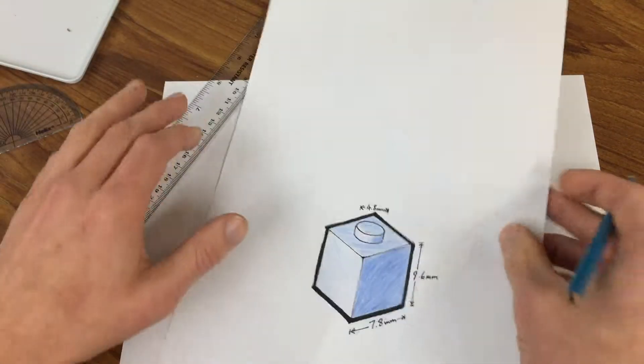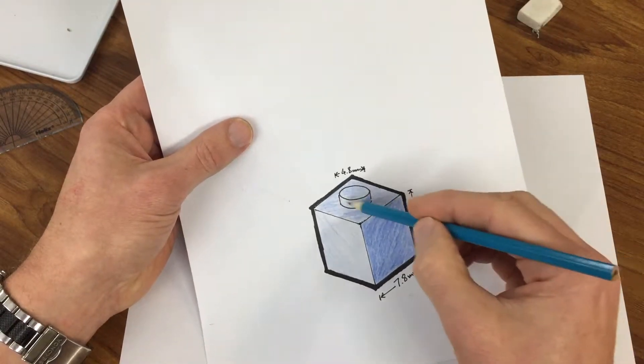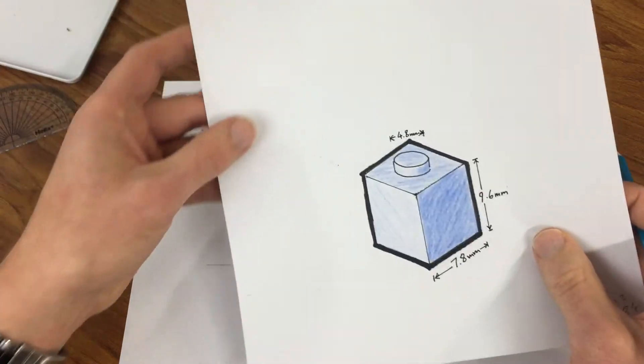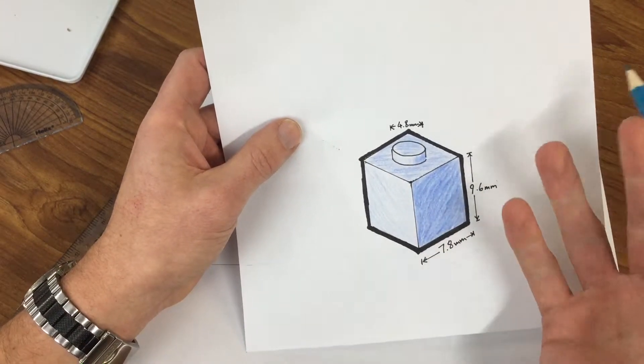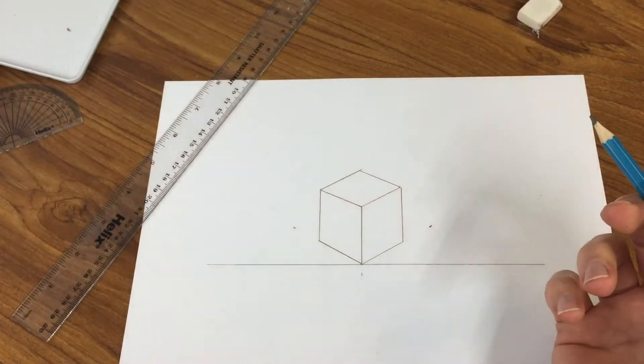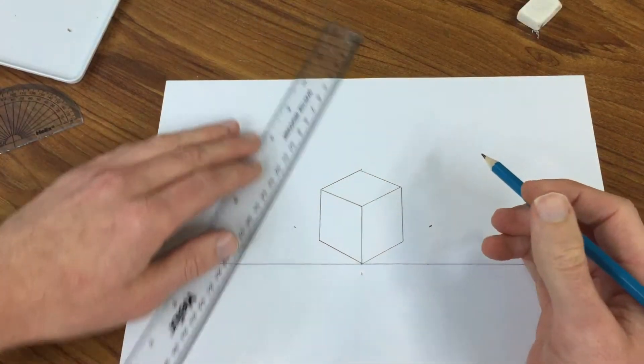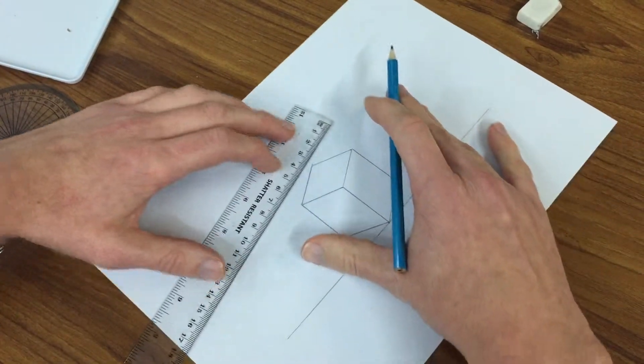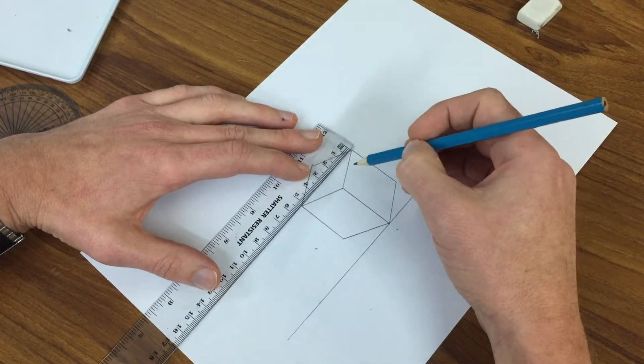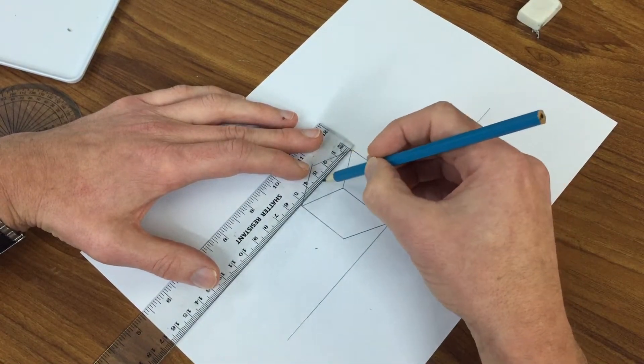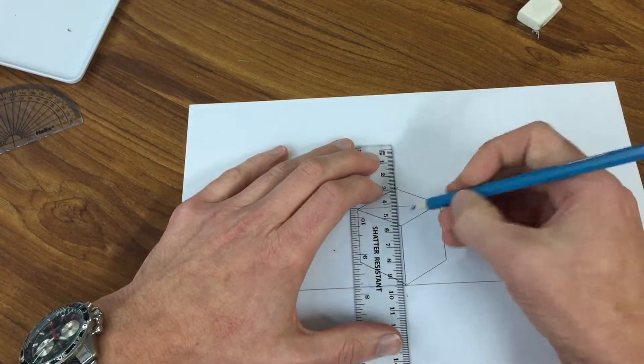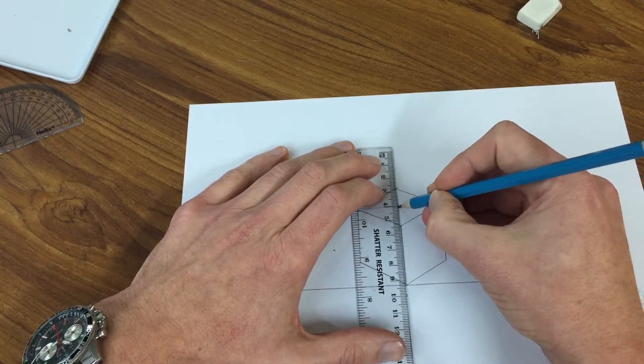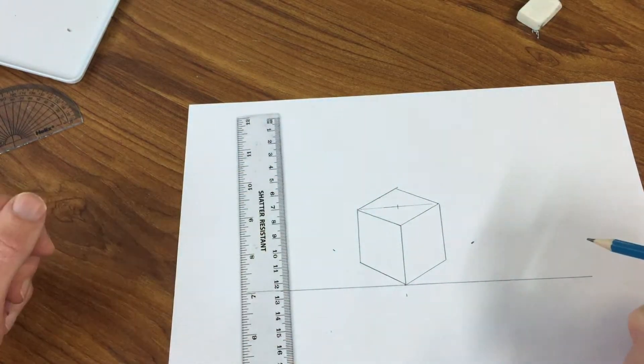I now need to draw this top part. You'll notice anything round appears like an oval when viewed at from a 3D perspective. So to find the center of the box, first I'm going to do some faint guidelines from point to point. And I just need the center - a little cross there. That gives me the center of the top.